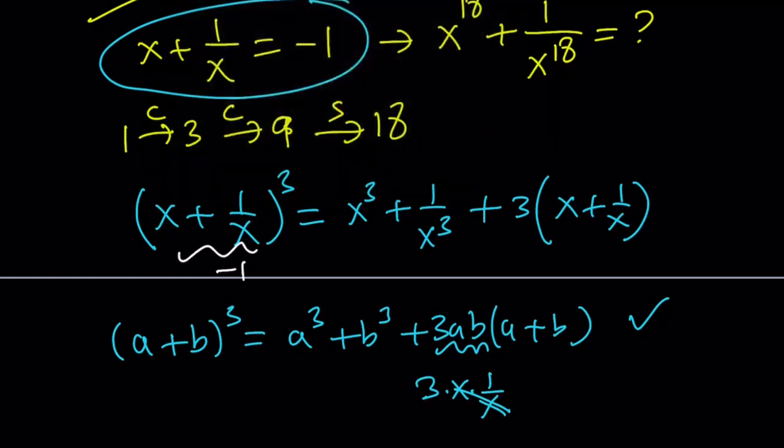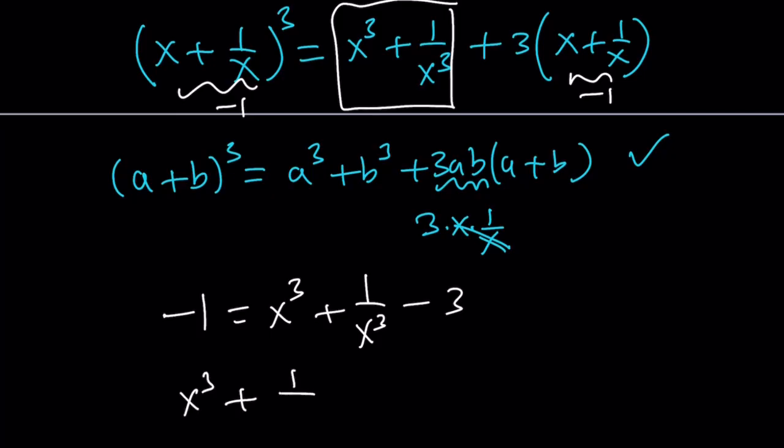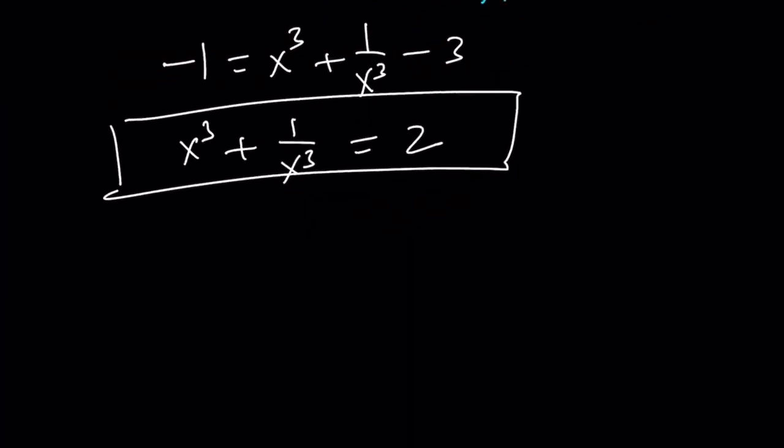So this is negative 1 and this is negative 1. So from here, I can find x plus 1 over x cubed plus 1 over x cubed, because all I have to do is negative 1 cubed, which is negative 1, equals x cubed plus 1 over x cubed plus 3 times negative 1, which is a negative 3 or a minus 3. If you add 3 to both sides, you get x cubed plus 1 over x cubed equals 2. Great. So we got the sum of the cubes, sort of.